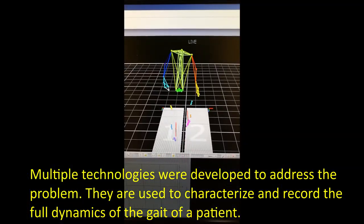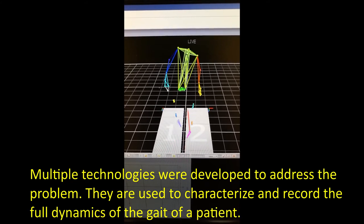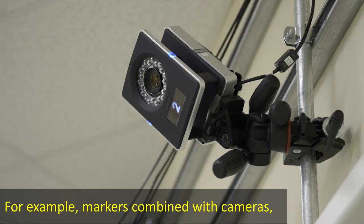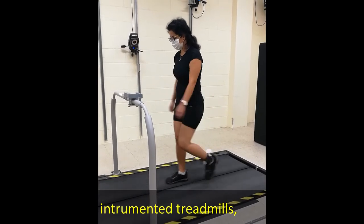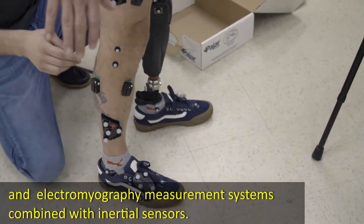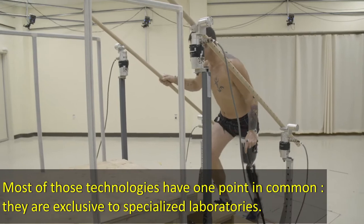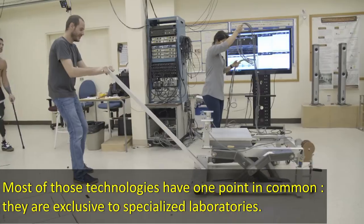Multiple technologies were developed to address the problem. They are used to characterize and record the full dynamics of the gait of a patient. For example, markers combined with cameras, instrumented treadmills, and electromyography measurement systems combined with inertial sensors. Most of those technologies have one point in common: they are exclusive to specialized laboratories.